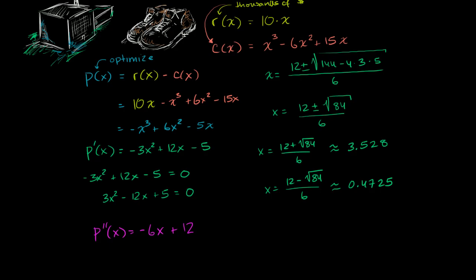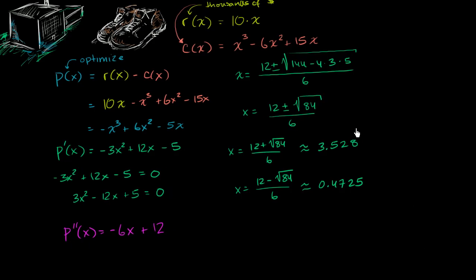So if we look at p prime prime of 3.528, this is between 3 and 4. If we take the lower value, 3 times negative 6 is negative 18 plus 12, it's going to be less than 0. So this thing is going to be less than 0. Now what about 0.47? That's roughly 0.5, so negative 6 times 0.5 is negative 3. This is going to be nowhere close to being negative. This is definitely going to be positive. So p prime prime of 0.4725 is greater than 0.